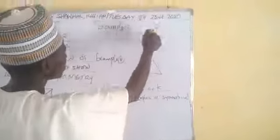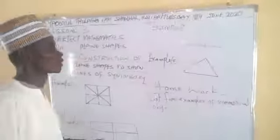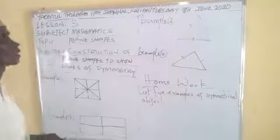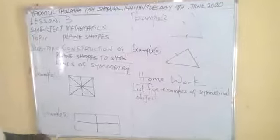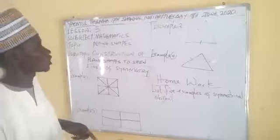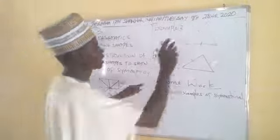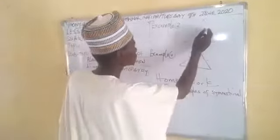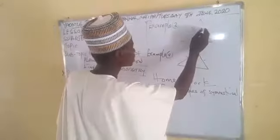Example three is an equilateral triangle. As the name implies, it is a special type of triangle — all its sides and all its angles are equal. Let us see how to draw the line of symmetry.